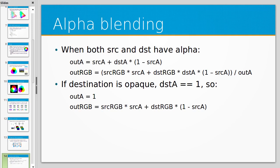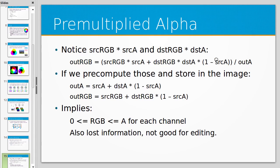These equations require multiplications for each colour channel and each pixel, which can be expensive. So there's something called pre-multiplied alpha, where these multiplications can be determined in advance. Since we already know the source red, green, blue, and alpha values for a given pixel, we can multiply those RGB channels by the alpha and store that into the image instead of doing those multiplies at runtime. That's called a pre-multiplied alpha image — we've already done some of the computation needed for alpha compositing.